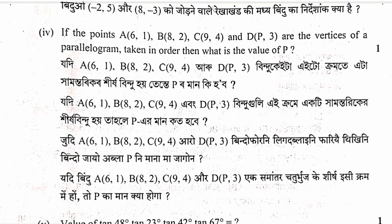Question: The vertices of a parallelogram are given, find the value of p. We know that the diagonals of a parallelogram bisect each other, so the midpoints of both diagonals are equal. Setting the midpoint coordinates equal and solving gives the value of p.